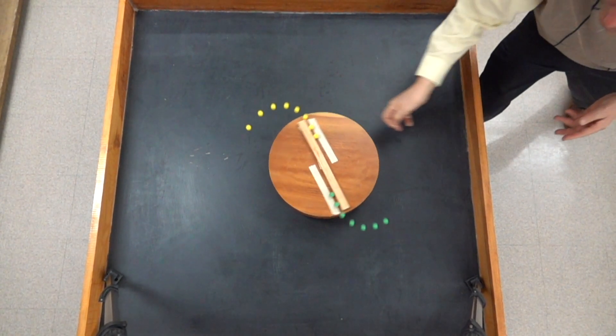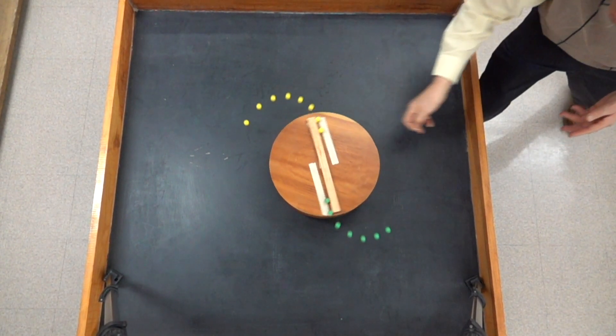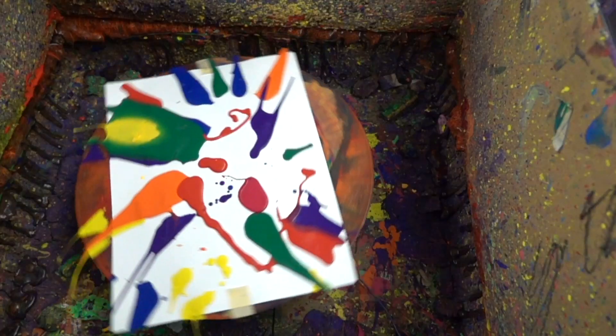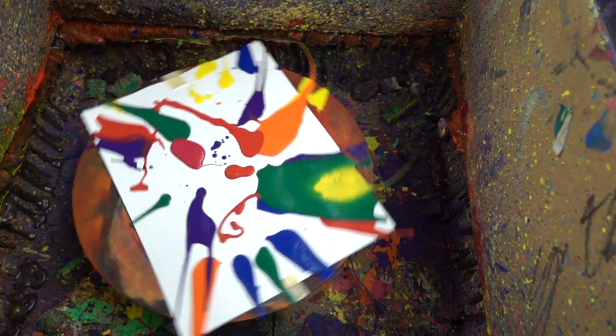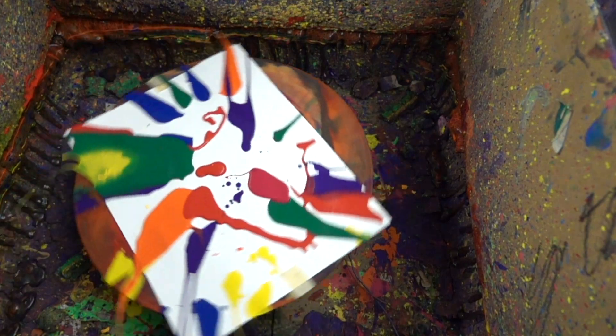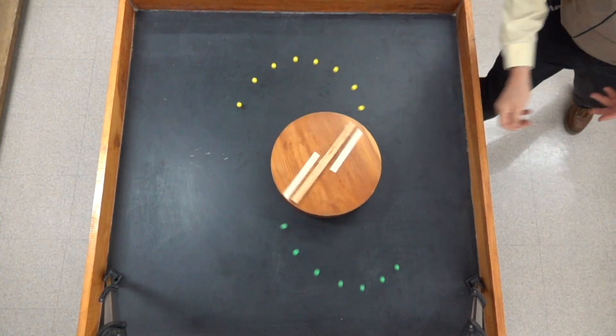The same would be true for the particles of paint. The curving trail of paint is simply because the drops leave at different positions. Looking back at the marbles, we see the same type of curve.